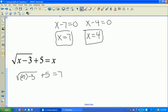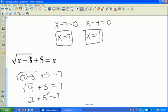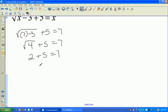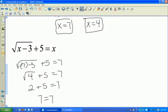So I have 7 minus 3 is 4, leaving me with the square root of 4 plus 5 equals 7. The square root of 4 obviously is 2 plus 5 equals 7, giving me a correct true solution at the bottom, 7 equals 7. So what that's telling me is that 7 is a solution.